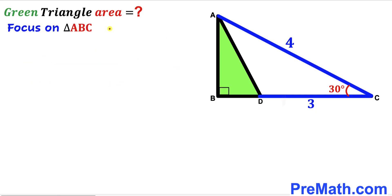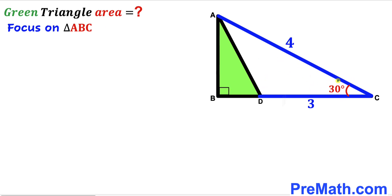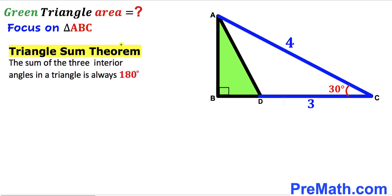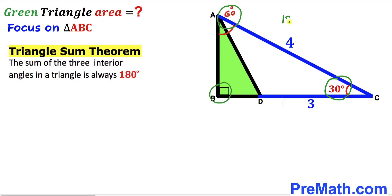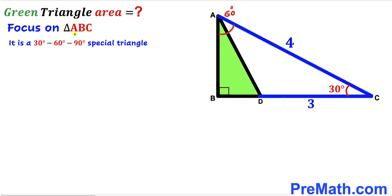Let's get started. Let's focus on right triangle ABC. We know one of the angles is 30 degrees and another is 90 degrees. Recalling the triangle sum theorem — the sum of three interior angles in a triangle is always 180 degrees — we conclude that angle BAC is 60 degrees. So triangle ABC is a 30-60-90 special triangle.